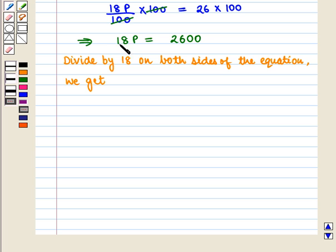This implies that 18P/18 = 2600/18. This implies that P = 144.4.